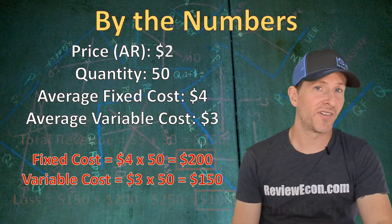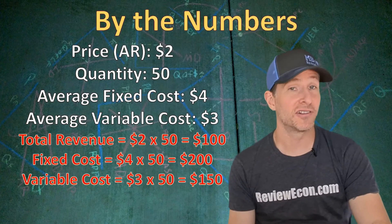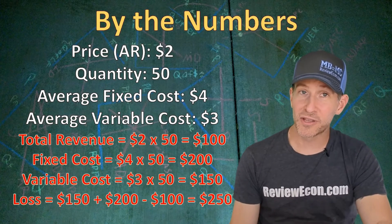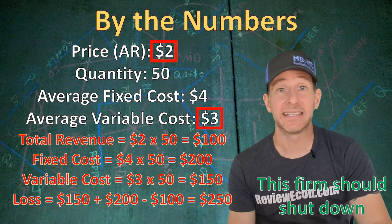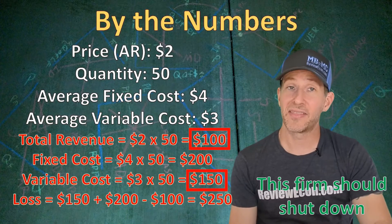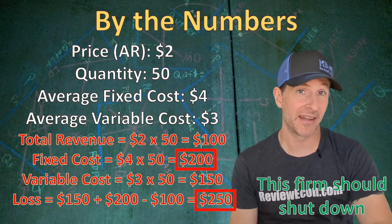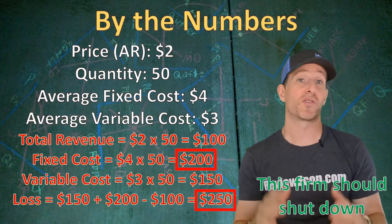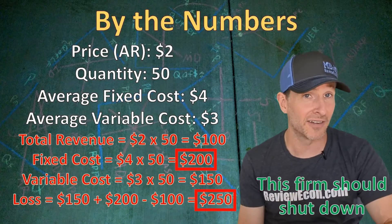If the price of this product falls down to $2, we can check those numbers once again. Total revenue is now $100 and the economic loss will be $250. Now this firm should actually shut down in the short run. That's because the price and average revenue is less than the average variable cost, the total revenue is less than the total variable cost, and the economic losses are greater than the fixed cost. So this firm will actually lose less money by shutting down. And again, this isn't a permanent shutdown — the firm is just going to close until they can bring in enough revenue to at least cover their variable costs.